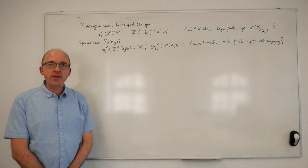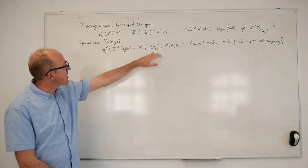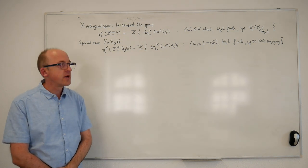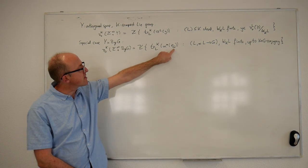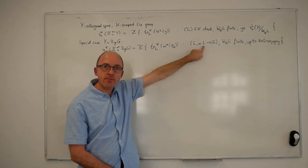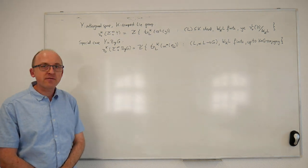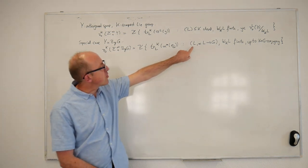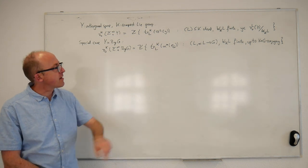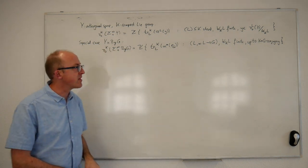The case we are mostly interested in is when the orthogonal space is the global classifying space of a compact Lie group. The 0th K-equivariant homotopy group of the suspension spectrum of the global classifying space of G is again a free abelian group. A basis is given by taking the stable tautological class associated to the group G, restricting the continuous homomorphism α defined on a closed subgroup L of K, and then transferring up from L to K. Here the pairs (L, α) run over representatives of the K×G conjugacy classes, where L is a closed subgroup with finite Weyl group and α is any continuous homomorphism, and K×G acts by conjugating L to the conjugate subgroup and conjugating the homomorphism in front and back.